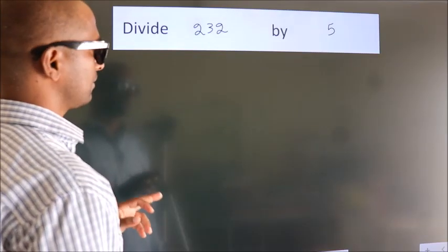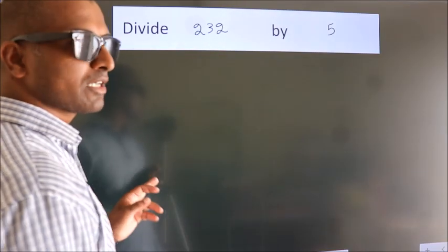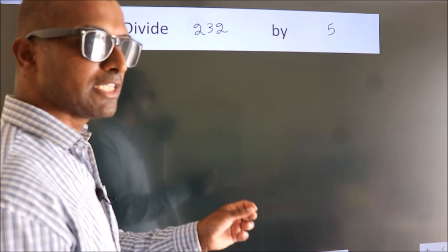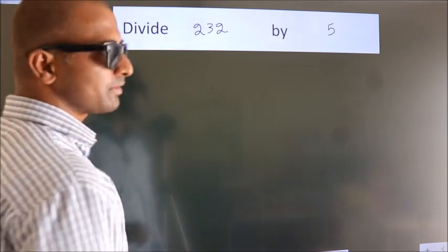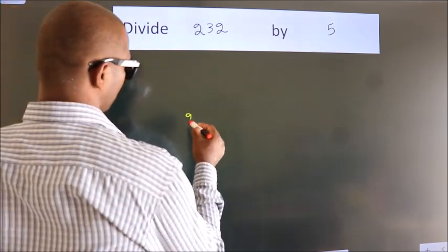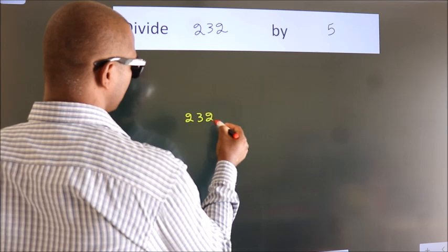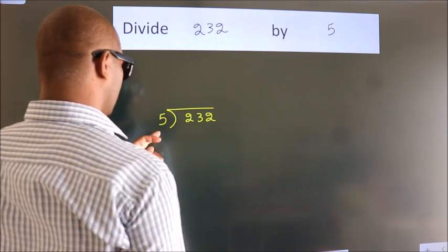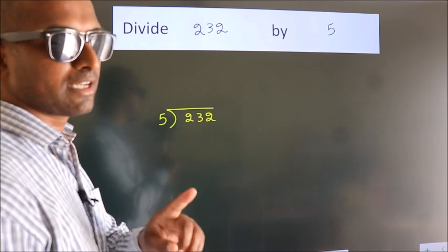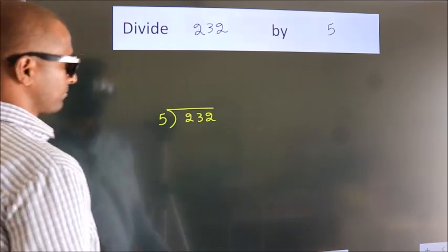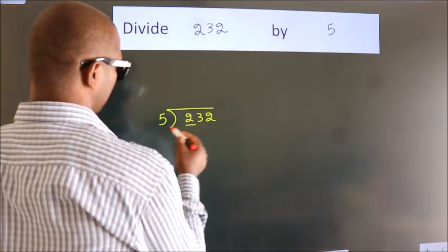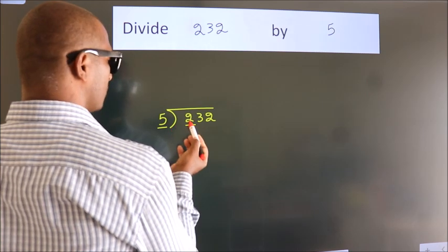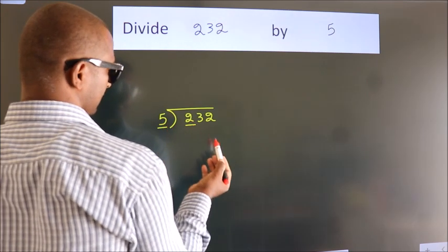Divide 232 by 5. To do this division, we should frame it in this way: 232 here, 5 here. This is your step 1. Next, here we have 2. 2 is smaller than 5, so we should take two numbers, 23.